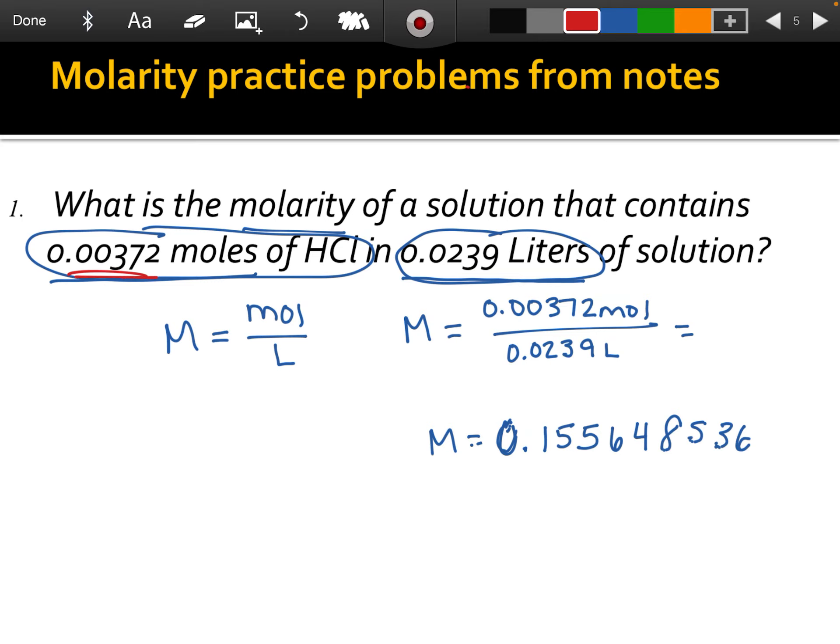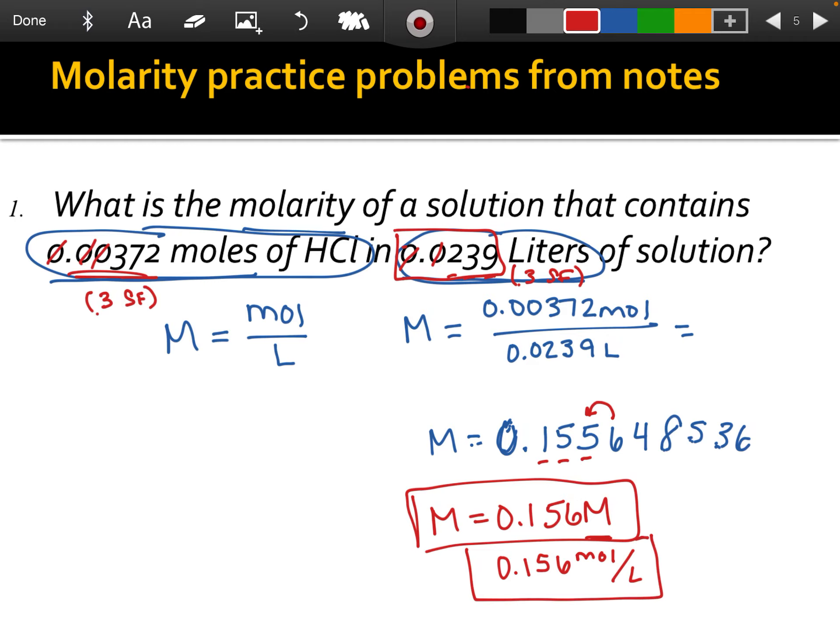The number 0.00372 has three sig figs. Because remember, these leading zeros don't count. They are just placeholders. The volume value has three sig figs as well. So we would want to keep three sig figs. So the six will cause the five to round up. So molarity is going to be equal to 0.156. And then you would label the capital M after the number to show that that is the molarity. You can label it with a capital M, or you could actually keep the moles per liter. Both of those would be basically the same answer. You could label it either way.